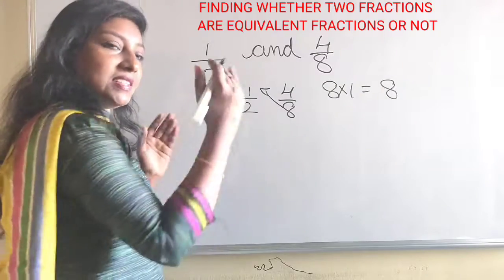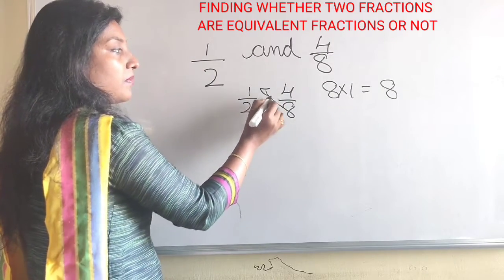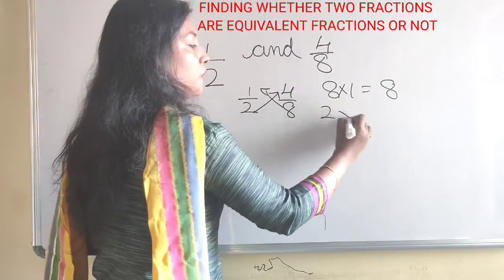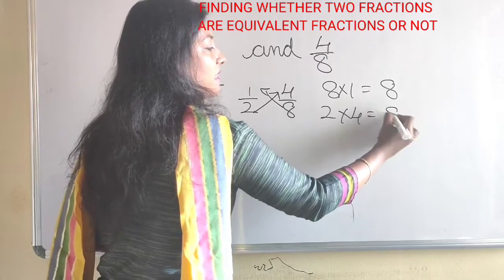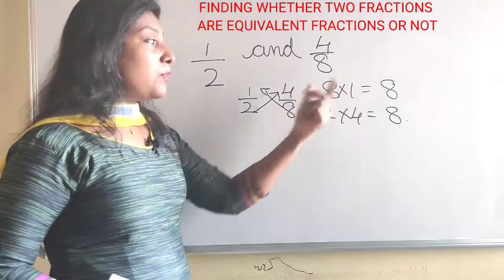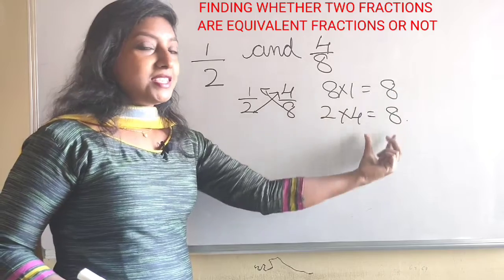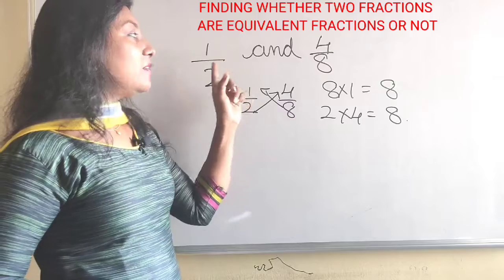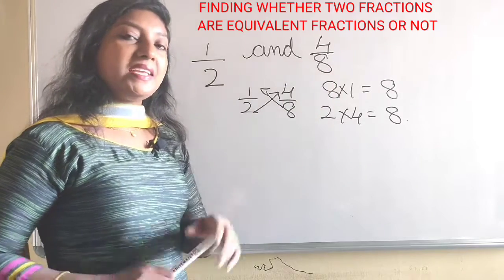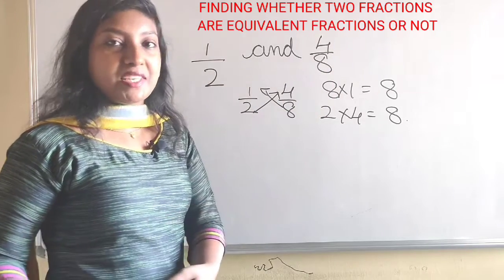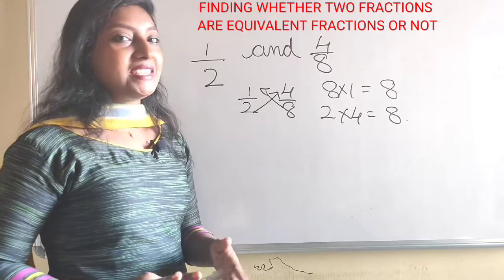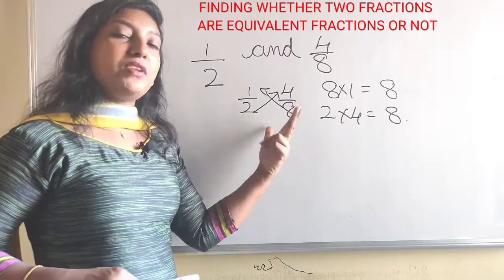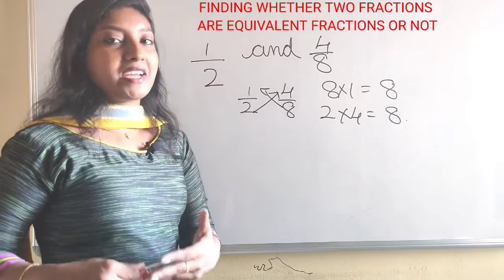Now, the next cross multiplication is 2 and 4. The product of 2 and 4 is 8. If we observe, the products of both cross multiplications are the same, so we can say that the fractions 1 by 2 and 4 by 8 are equivalent fractions. Here we have not done any cancellation — just by doing the cross multiplication, we can say whether the given fractions are equivalent fractions or not.